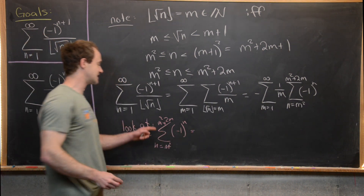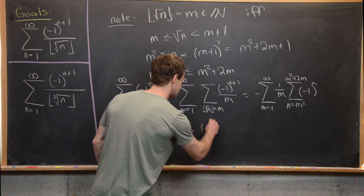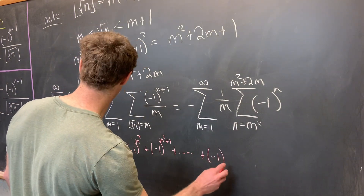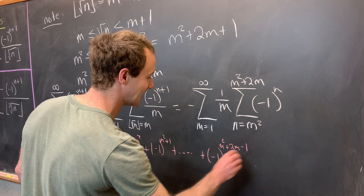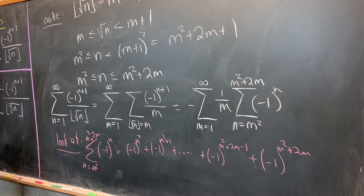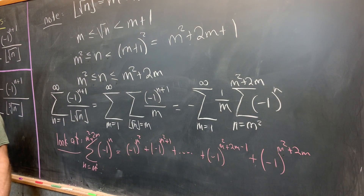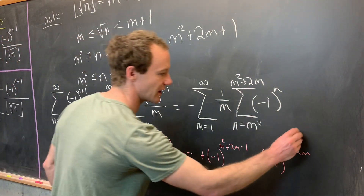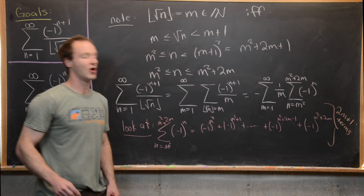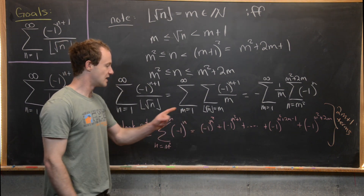This inner sum is just a sum of alternating plus and minus 1s. Expanding it out, we get minus 1 to the m squared, plus minus 1 to the m squared plus 1, all the way up to minus 1 to the m squared plus 2m. There are exactly m squared plus 2m minus m squared plus 1 terms — so 2m plus 1 total terms — and they're alternating.